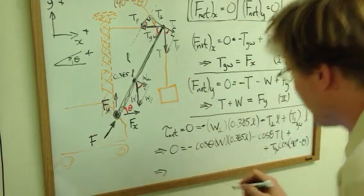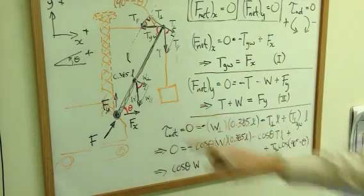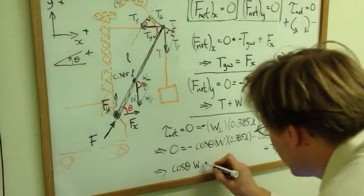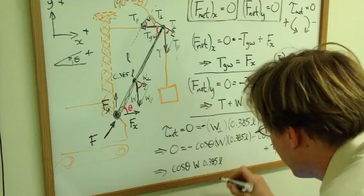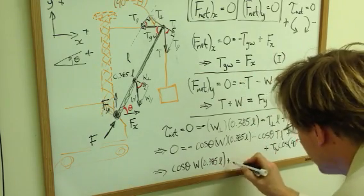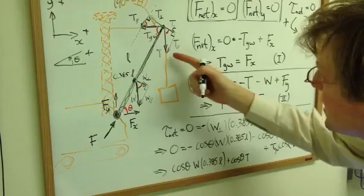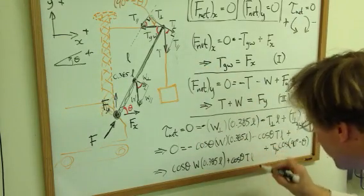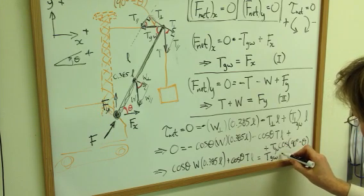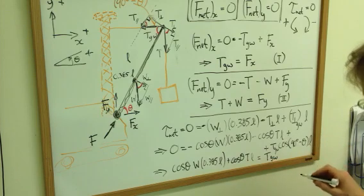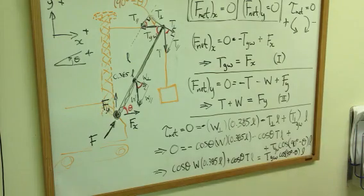This is negative, that's negative, I can bring it over. So I have cos theta times this weight times 0.385 times the length, plus this cos theta tension here in the wire at the full length acting, and both of those equal to the tension in the guy wire, cos 90 degrees minus theta times the full length of the guy wire.